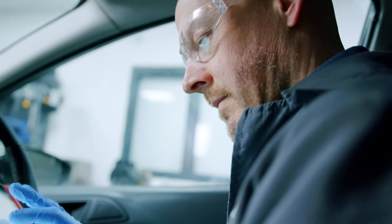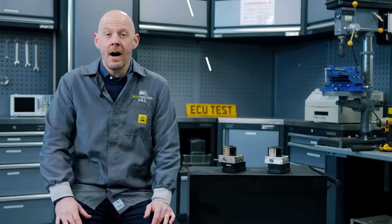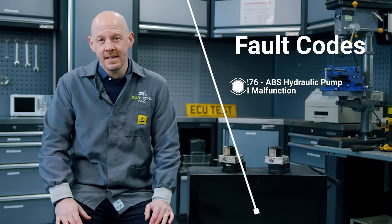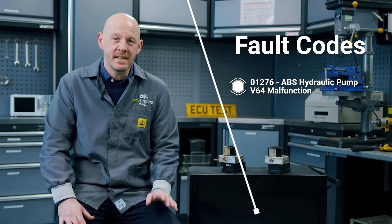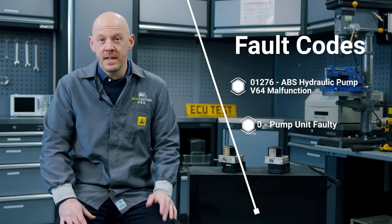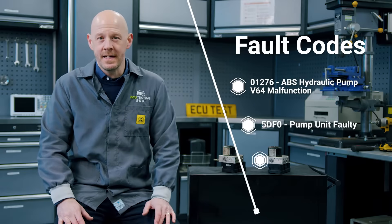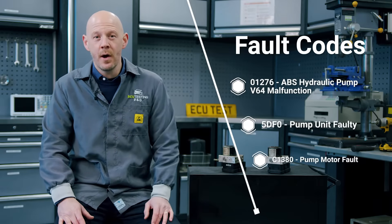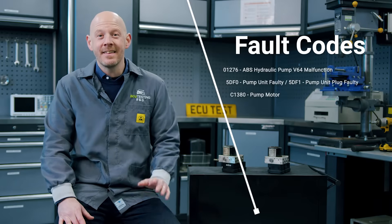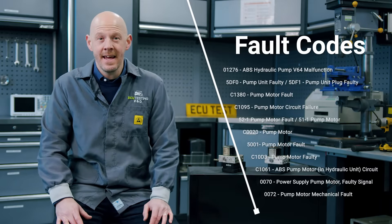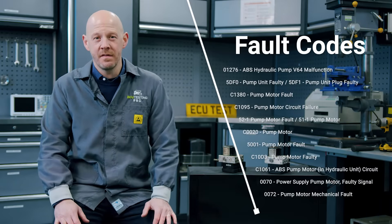Some of the most commonly reported fault codes for the pump motor fault problem are 01276 ABS hydraulic pump V64 malfunction, 5DF0 pump unit faulty, C1380 pump motor fault, and the list goes on. As you can see here there are countless codes for the same fault.